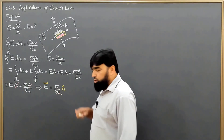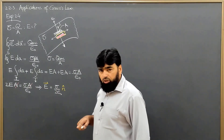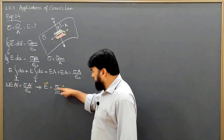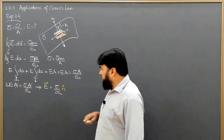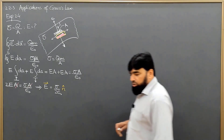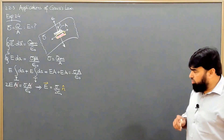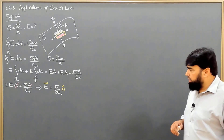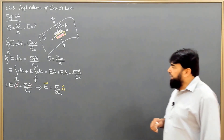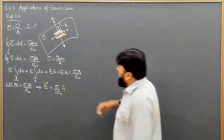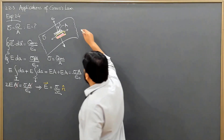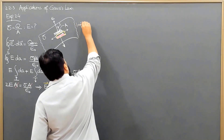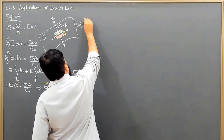This is sigma over 2 epsilon naught. Sigma is constant, 2 epsilon naught is constant, so the electric field is constant. The reason for this is that we have considered an infinite sheet of charge.